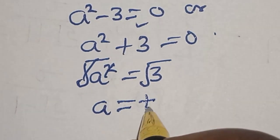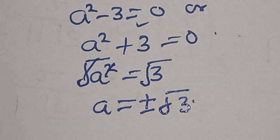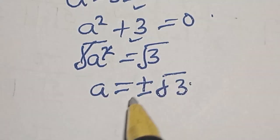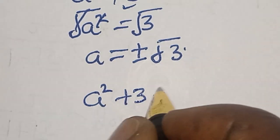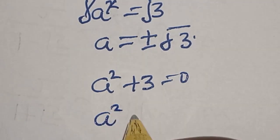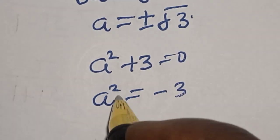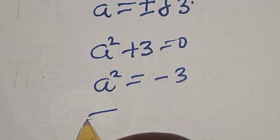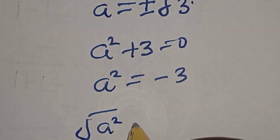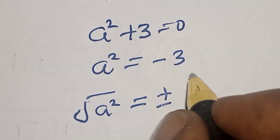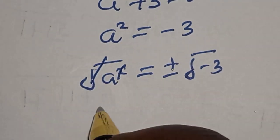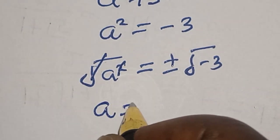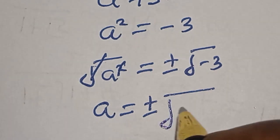From the second case, A squared plus 3 is equal to 0, so A squared is equal to minus 3. Now let's take the square root of both sides. The square root of A squared is equal to plus or minus the square root of minus 3, which gives the square root of 3 times i.